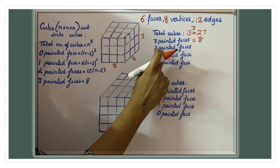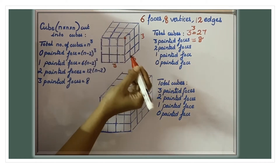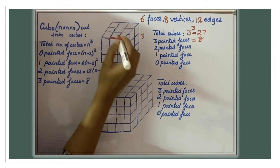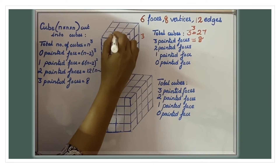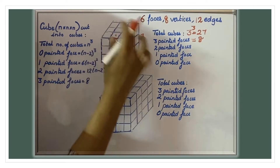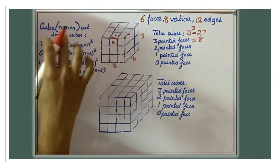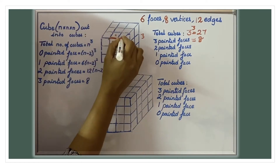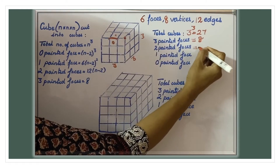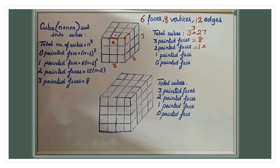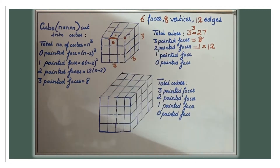How many cubes are two faces painted? Two-face-painted cubes are found at each edge. Take one edge — in that edge, only one cube is two faces painted. Multiply that by how many edges the cube has, which is twelve. So twelve cubes are two faces painted.